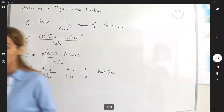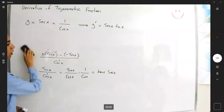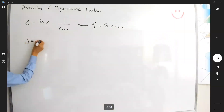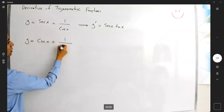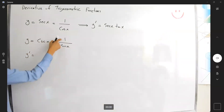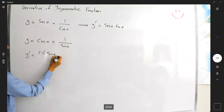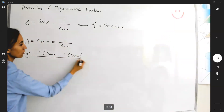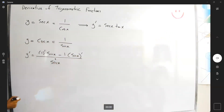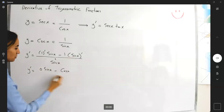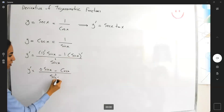With the same argument, we're going to find the derivative of cosecant as well. If y is equal to cosecant of x, this is 1 over sine of x. Again, we can apply the quotient rule. The derivative of 1 times sine x, minus 1 times the derivative of sine, divided by sine squared of x. So y' becomes 0 times sine x minus the derivative of sine, which is cosine, divided by sine squared of x.